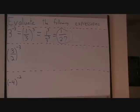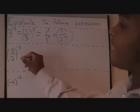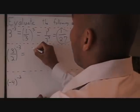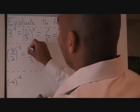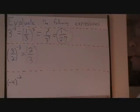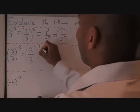For the next problem, I have 3 over 2 raised to the negative 3. My base now is 3 over 2, so if I take the reciprocal of my base and rewrite that as 2 over 3, I can now make this exponent positive. That's all going to be raised to the third.